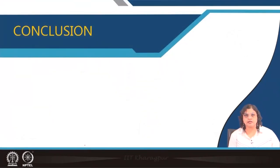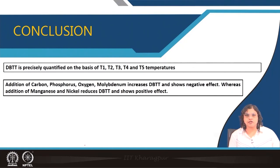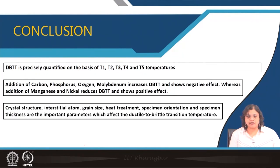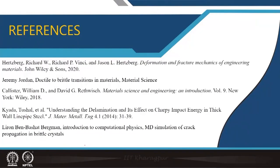In conclusion: DBTT is precisely quantified on the basis of T1, T2, T3, T4, and T5 temperatures. Addition of different interstitial elements can alter the DBTT — carbon, phosphorus, oxygen, and molybdenum increase DBTT (negative effect), while manganese and nickel reduce DBTT (positive effect), and the Mn:C ratio should be varied from 3:1 to 7:1 to achieve the optimized property. Other factors like crystal structure, interstitial atoms, grain size, and heat treatment can all alter the ductile to brittle transition behavior, which will be covered in the next lectures.